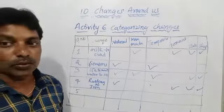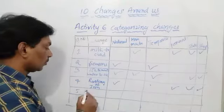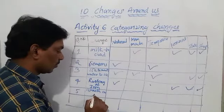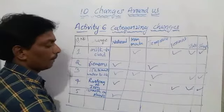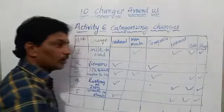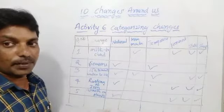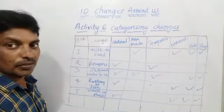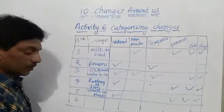The fifth example is growth in plants. It is a natural change and a permanent change. The shape is going to change as new branches grow. The state remains the same, but the structure changes.